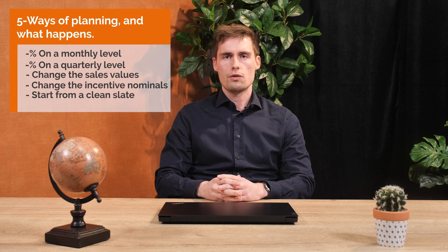We want to plan the percentages and the associated nominals or values at the same time. To show you that, we will do 5 ways of input. After that we show you the story setup. There are 5 ways: we will do percentage on a monthly level, on a quarterly level, we will change the sales values and the incentive nominals.